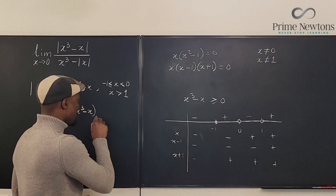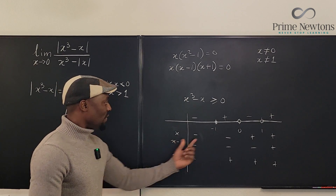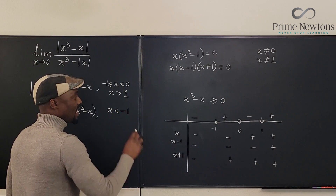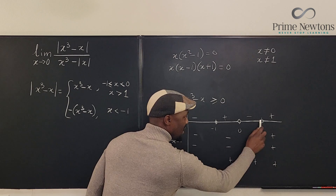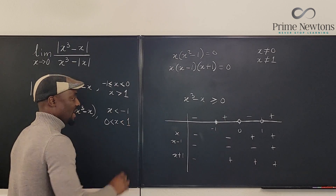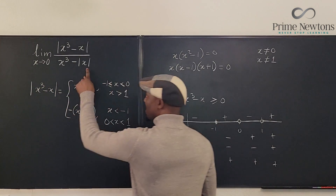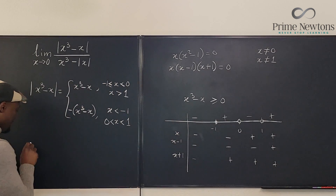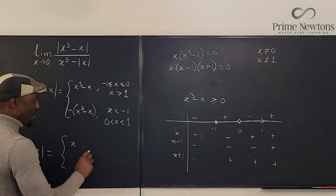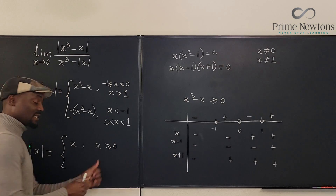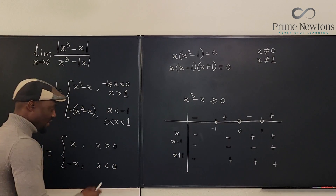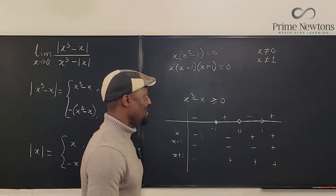Now for the bottom piece. Once you've done the sign chart you can copy and paste: the negative region satisfies x < -1 or 0 < x < 1. Then for the absolute value of x: |x| = x when x > 0, and |x| = -x when x < 0. There's nothing to solve here because it's just one x. Now let's take the limit — our point of interest is at 0.